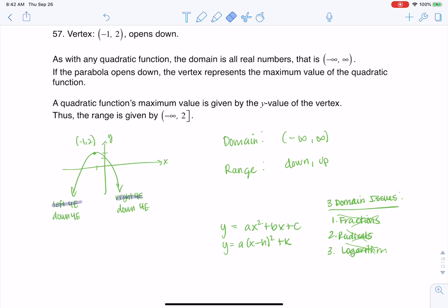Alright, now moving on to the range. If we take a look here, it looks like I went down forever on both of those, so I know that this is going to turn into negative infinity. But I did not have an up forever. My highest y-value that I hit was 2, and I did hit that value, so I'm going to put the bracket on it.